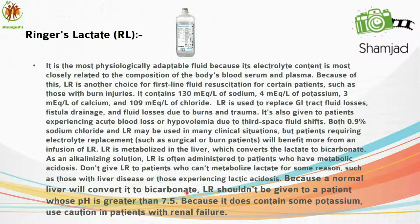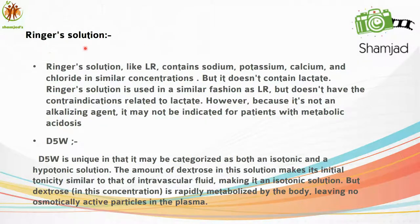Because a normal liver converts lactate to bicarbonate, LR should not be given to a patient whose pH is greater than 7.5. Because it contains some potassium, use caution in patients with hyperkalemia. Next is Ringer's solution, which like LR contains sodium, potassium, calcium, and chloride in similar concentrations but does not contain lactate. It is used similarly to Ringer's Lactate but without the contraindications related to lactate; however, because it is not an alkalizing agent, it may not be indicated for patients with metabolic acidosis.